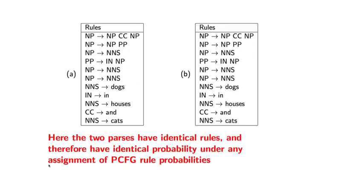Again, we can play this game where we simply list the rules in the two analyses that I've just shown you. And in this case, we see the following. So here is the set of rules in the first analysis, here is the set of rules in the second analysis. And the rules are actually identical. We have exactly the same set of rules in the two parse trees that I just showed you. And so because of this, they have to have identical probability under any PCFG.